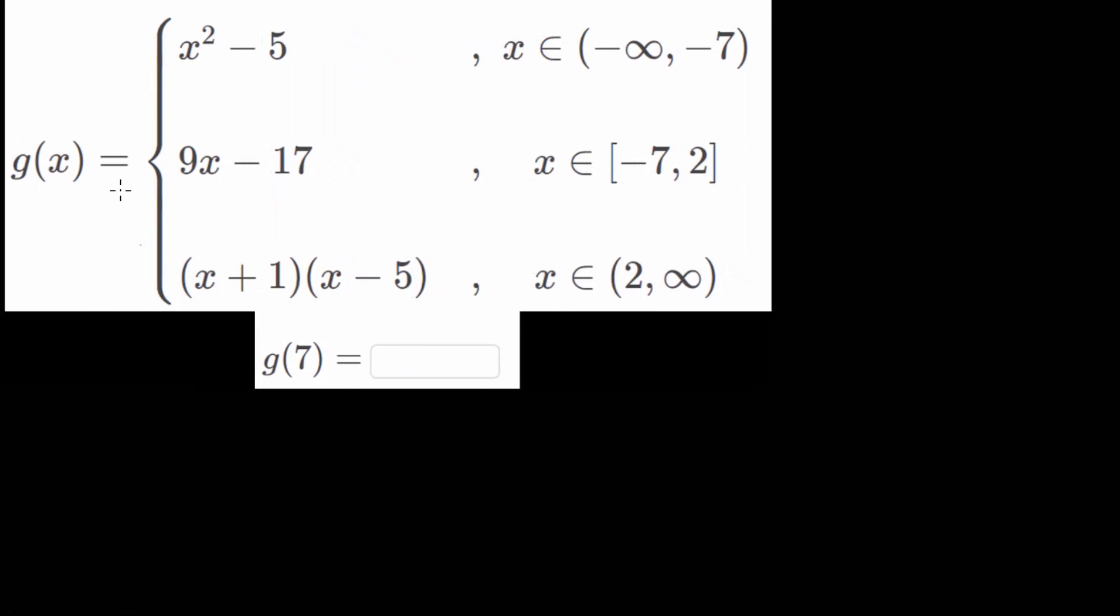And remember for piecewise functions, that they take on different outputs, depending on which values of x you are dealing with. And if you're familiar with interval notation, that's what we have here. This output deals with x values between negative infinity and negative 7, and the parentheses means that we're not including negative 7 at that end point. Whereas, when x is between negative 7 and 2, including those end points, then we use this linear function.